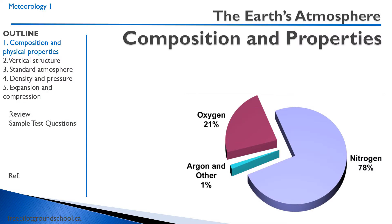Let's discuss the earth's atmosphere — the composition and the properties of the earth's atmosphere. The earth's atmosphere is 78% nitrogen, 21% oxygen, and 1% argon and other gases such as carbon dioxide.